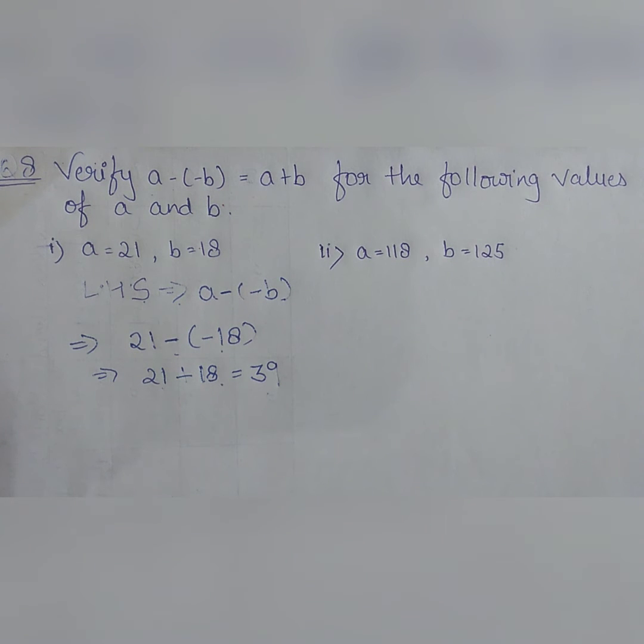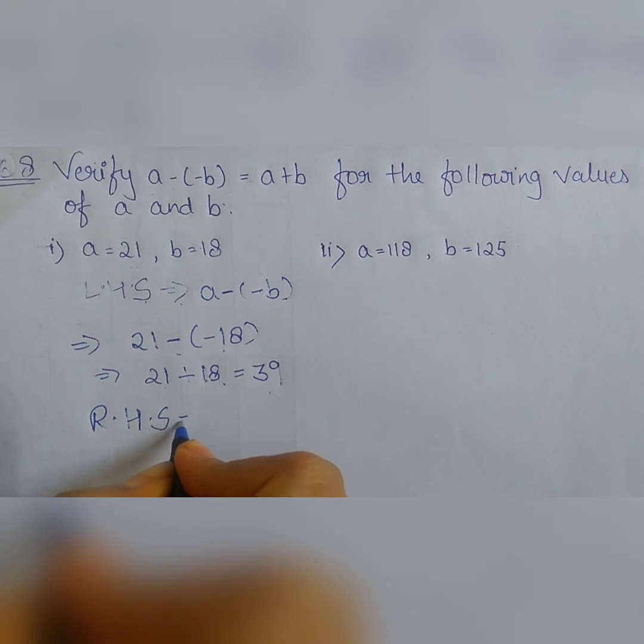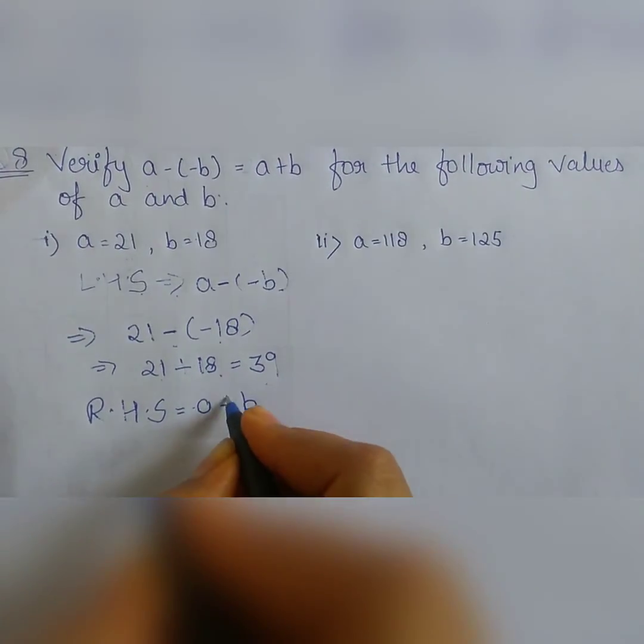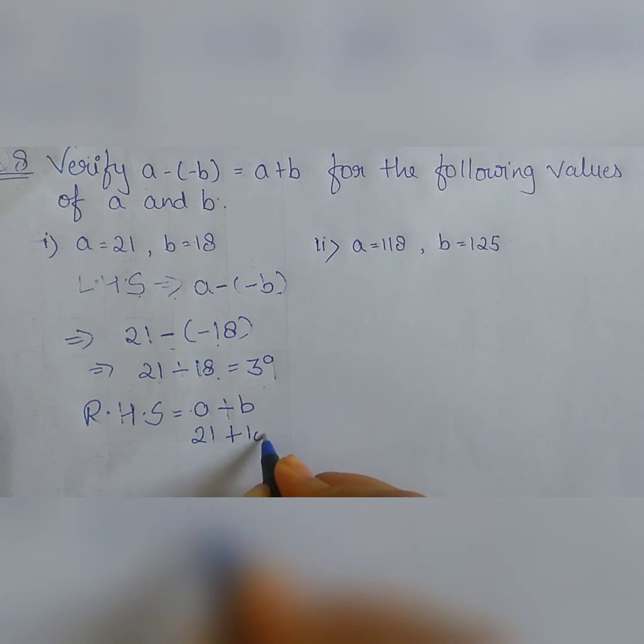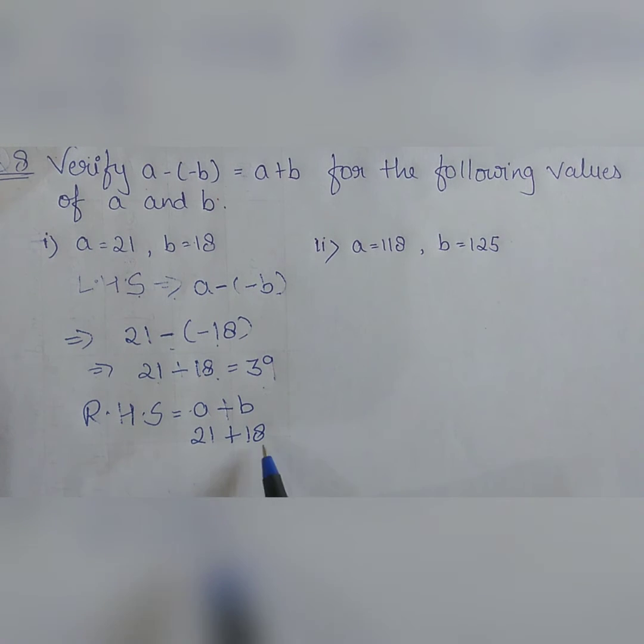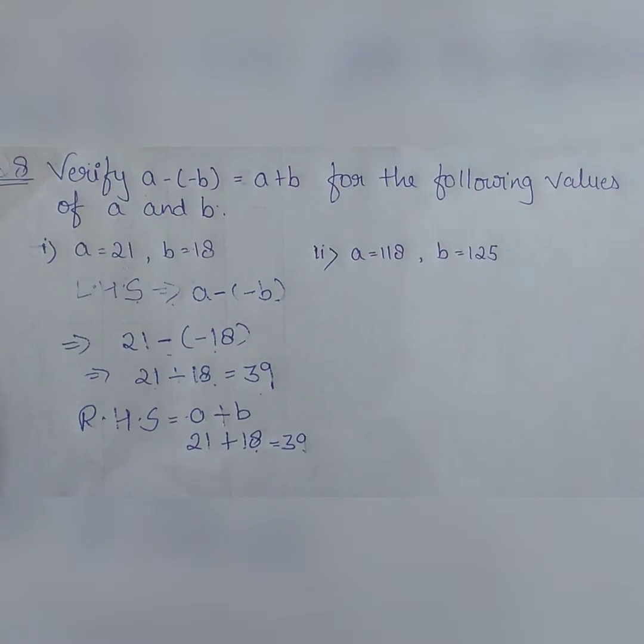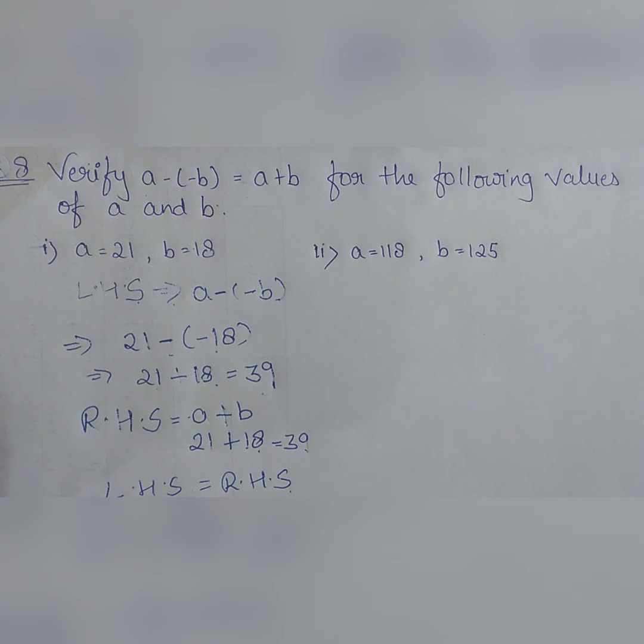Now let's see whether the RHS is also 39 or not. So LHS equals RHS equals A plus B. Now A we are having is 21, B is 18. So 20 plus 10 is 30, 30 plus 8 is 38, plus 1 is 39. So yes, LHS and RHS here are equal. So you will write LHS equals RHS. This is how we verify certain values for the given statement.